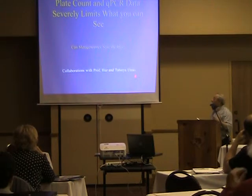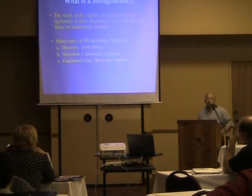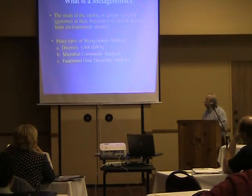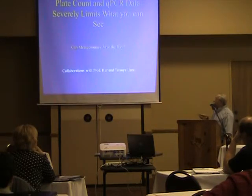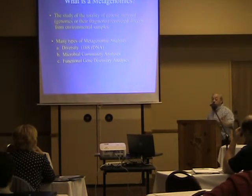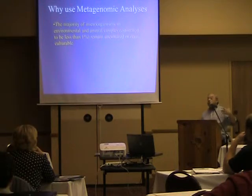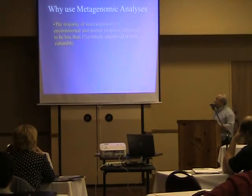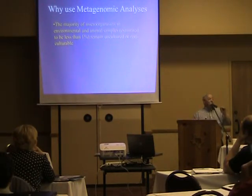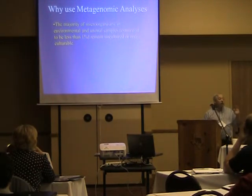Metagenomics is the study of all the DNA in an environmental sample regardless of its origin. Different types can be done: 16S analyses to define microbial diversity, microbial community analyses, or functional gene discovery analyses — the latter is what's used to discover new enzymes for laundry detergents. We use metagenomics because we can culture less than 1% of every organism in an environmental sample. E. coli, though long used as a fecal indicator organism, represents less than 1% of bacteria in your intestine — in most metagenome studies you can't even find E. coli.